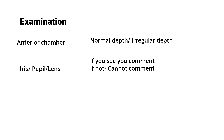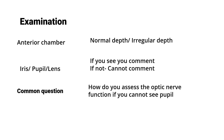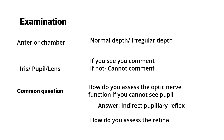A common exam question: if you cannot see the pupil, how do you assess optic nerve function? The answer is by indirect pupillary reflex — throw light on the affected eye and look for the pupillary reflex in the opposite eye; if it is brisk, the optic nerve is functioning well. Another question: how do you assess the retina if you cannot see it due to corneal opacity? The answer is B-scan ultrasonography.